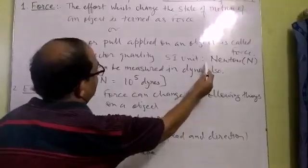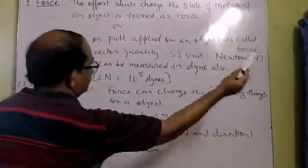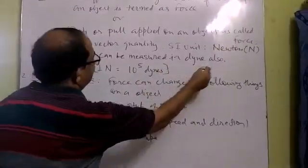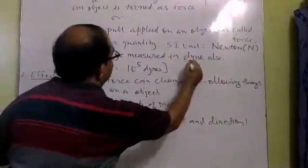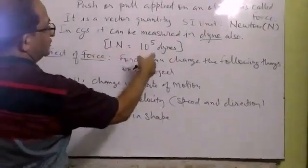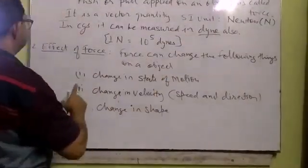The SI unit of force is Newton, meaning force can be measured in Newton. In CGS system, it can also be measured in dynes. 1 Newton is equal to 10 raised to power 5 dynes. You can remember this relation.